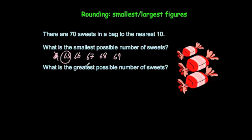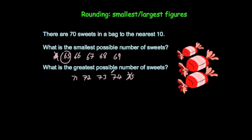What is the greatest possible number of sweets in the bag? Well, 71, 72, 73, and 74 would all round down to 70. But 75 would round up to 80. So therefore 74 is the greatest possible number of sweets in the bag.